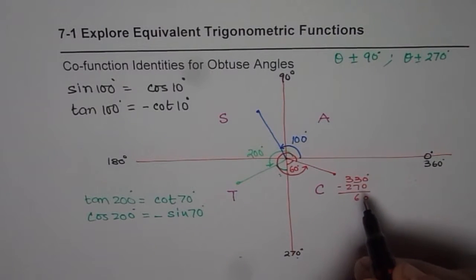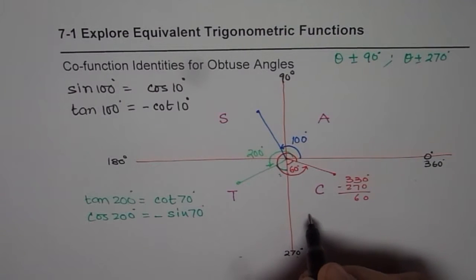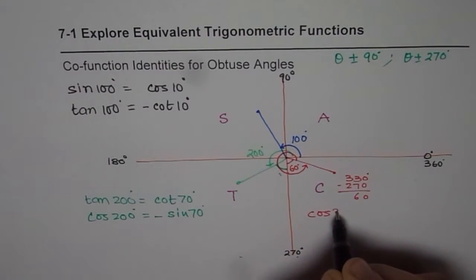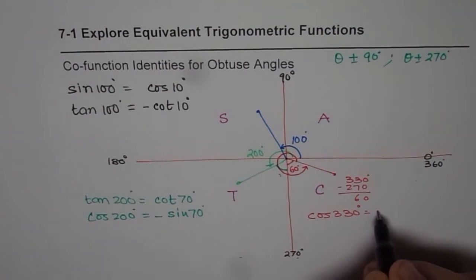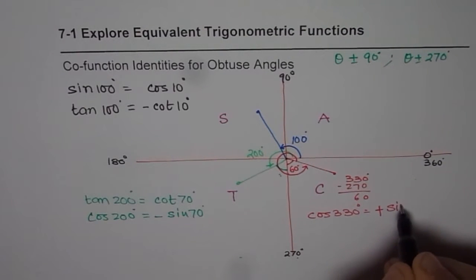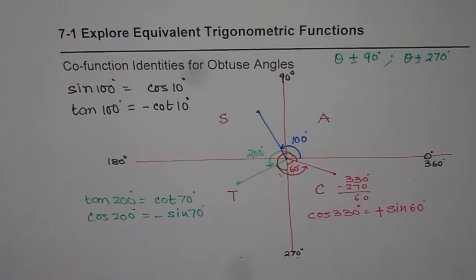So in this particular case, if I write cos of 330 degrees, I could say cos in terms of 60 should be equal to minus or plus. Oh, cos is positive. So plus, yeah? And sine of 60 degrees. You get the idea, right?